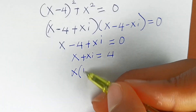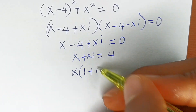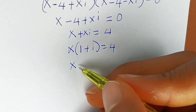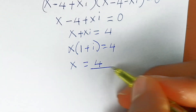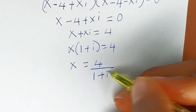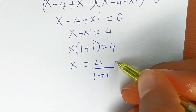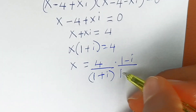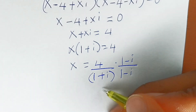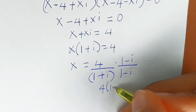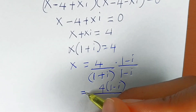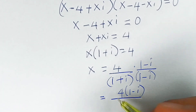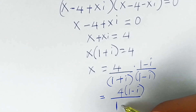So it's either x minus 4 plus xi equals 0, which implies x plus xi equals 4, meaning x(1 plus i) equals 4, so x equals 4 divided by (1 plus i). To rationalize this denominator, multiply numerator and denominator by (1 minus i), giving 4(1 minus i) divided by...